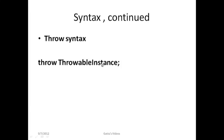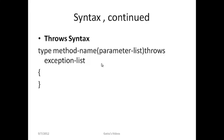The throw throwable instance must be an object of type Throwable or a subclass of Throwable, such as arithmetic, null, or array exceptions. Coming to throws — if a method is capable of causing an exception that it does not handle, it must specify what type of exception it may throw so that the caller of the method can handle these exceptions.